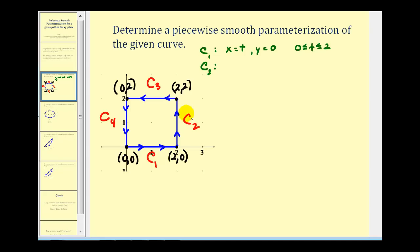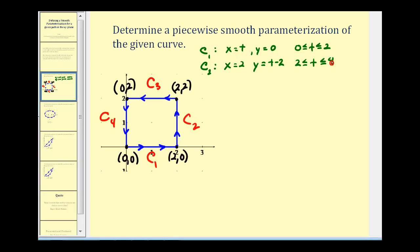For curve two, we go from the point (2, 0) to the point (2, 2). Notice x is equal to two, and y increases from zero to two. But we can't just put y equals t, because the value of t now has to start at two. So if we let y equal t minus two and let t go from two to four, when t is four, y would be equal to two, and it would take the path of curve two.